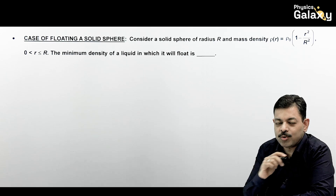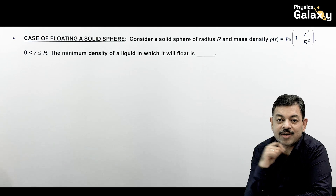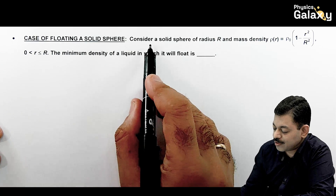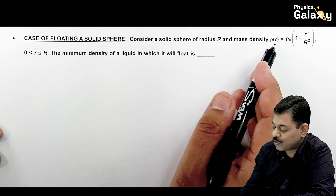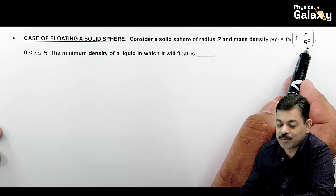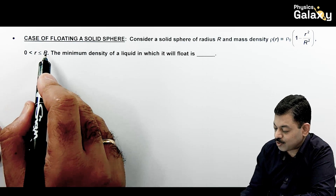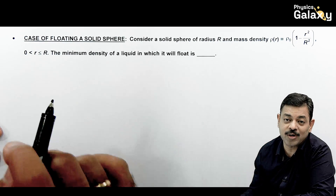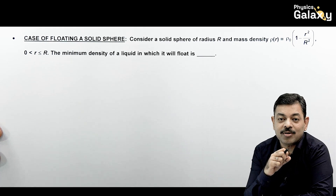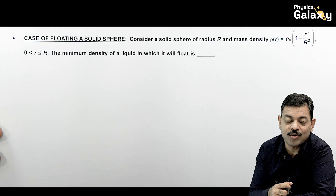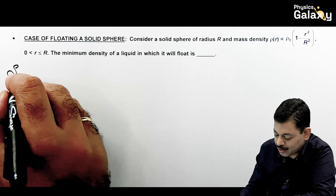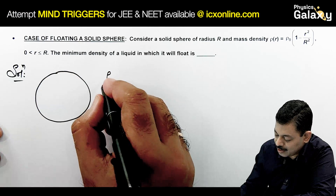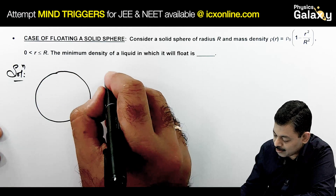Now we talk about a case where density is non-uniform in a given sphere, and we discuss floating of a solid sphere. Consider a solid sphere of radius R and mass density ρ given as ρ₀(1 - r²/R²), where small r varies from 0 to R. Its density is varying. We need to find the minimum density of a liquid in which the sphere can float. For floating, the buoyancy force must balance the weight.